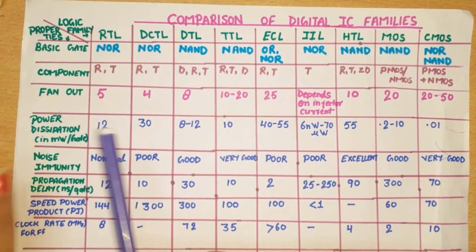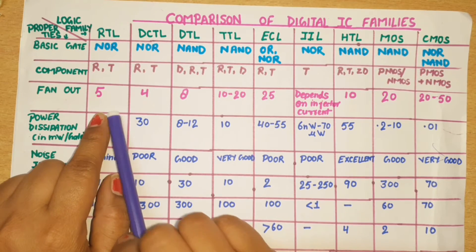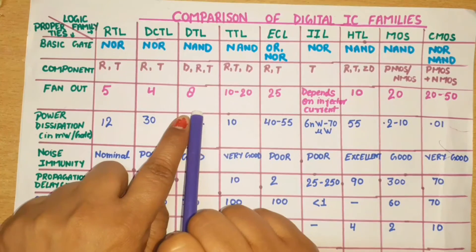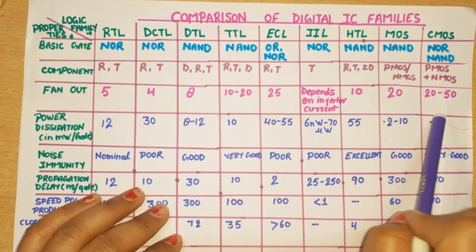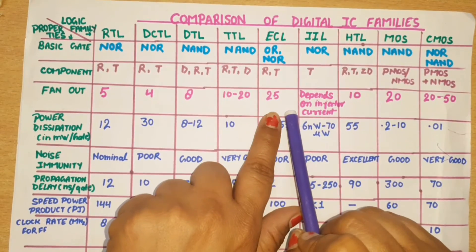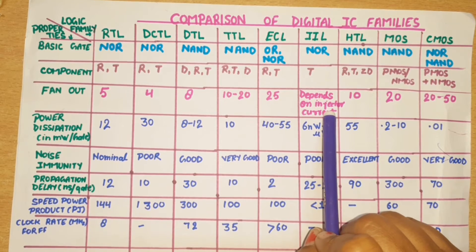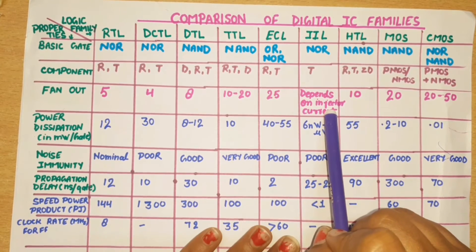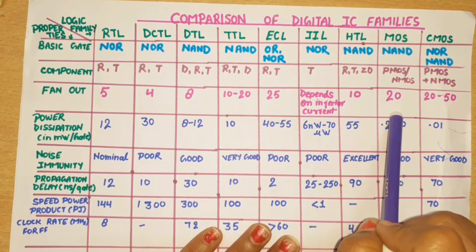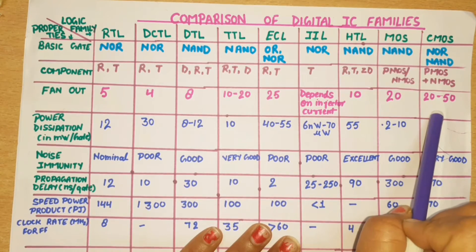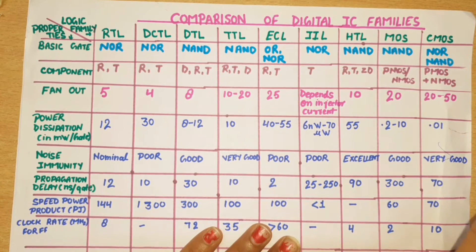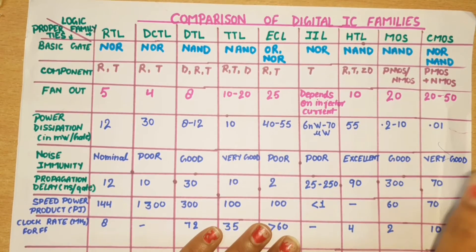The next property is fan-out. RTL has 5, DCTL has 4, DTL has 8, and TTL has high fan-out of 10 to 20. ECL is 25. I2L's exact value depends on how much current you inject, so it can be calculated. HTL is 10 and NMOS is 20. The highest fan-out is CMOS — meaning the most gates can be connected without affecting circuit operation.